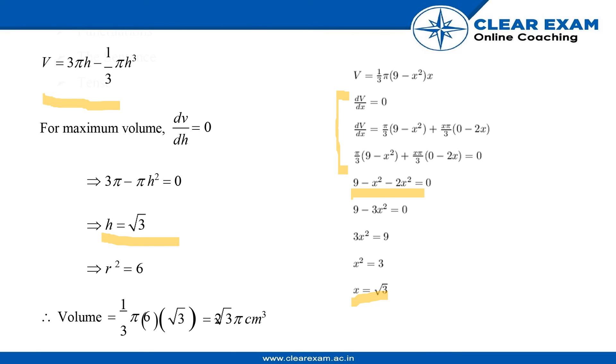And now as we know, and as we have substituted on the last slide, h = √3, therefore r² will equal to 6. Now after substituting the values of h and r² into the formula for volume, we will obtain 2√3π cm³. This is our answer. Thank you.